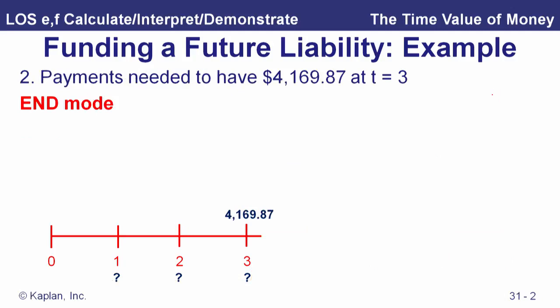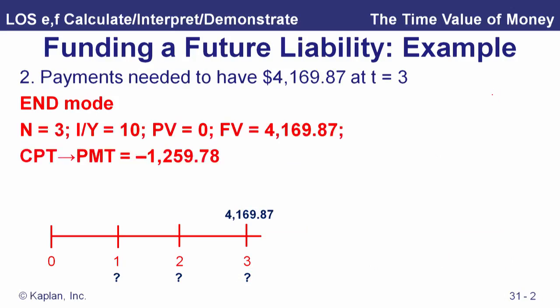Now switching to end mode: what three equal deposits must we make over three years (N=3, I/Y=10%, PV=0, FV=$4,169.87) to reach that amount at time three? We find we must deposit $1,259.78 per year. At 10% interest, those three deposits grow to exactly the $4,169.87 needed to fund the five $1,000 withdrawals calculated in begin mode.